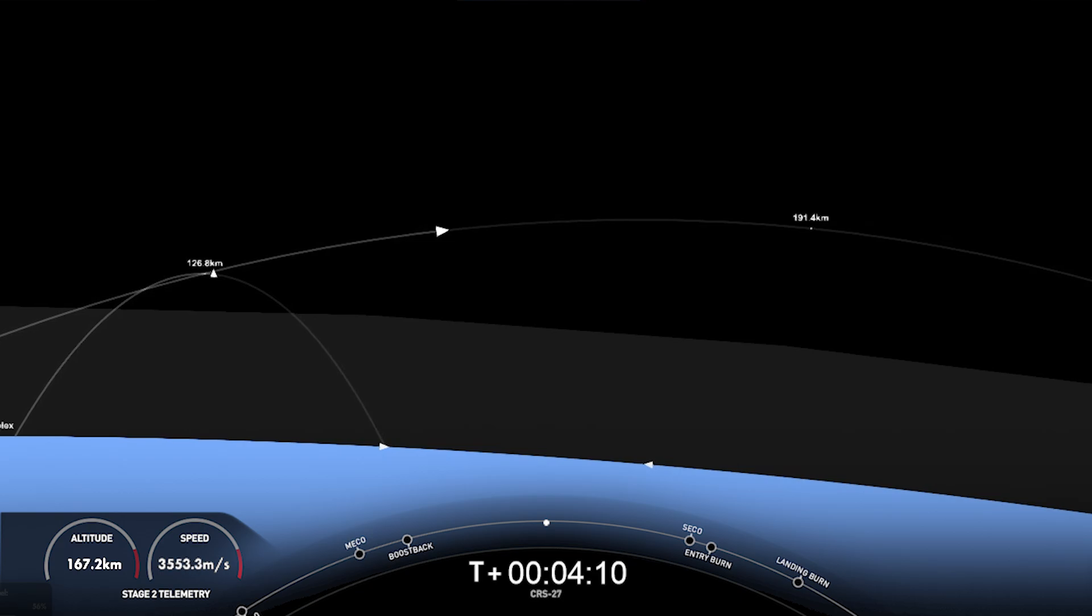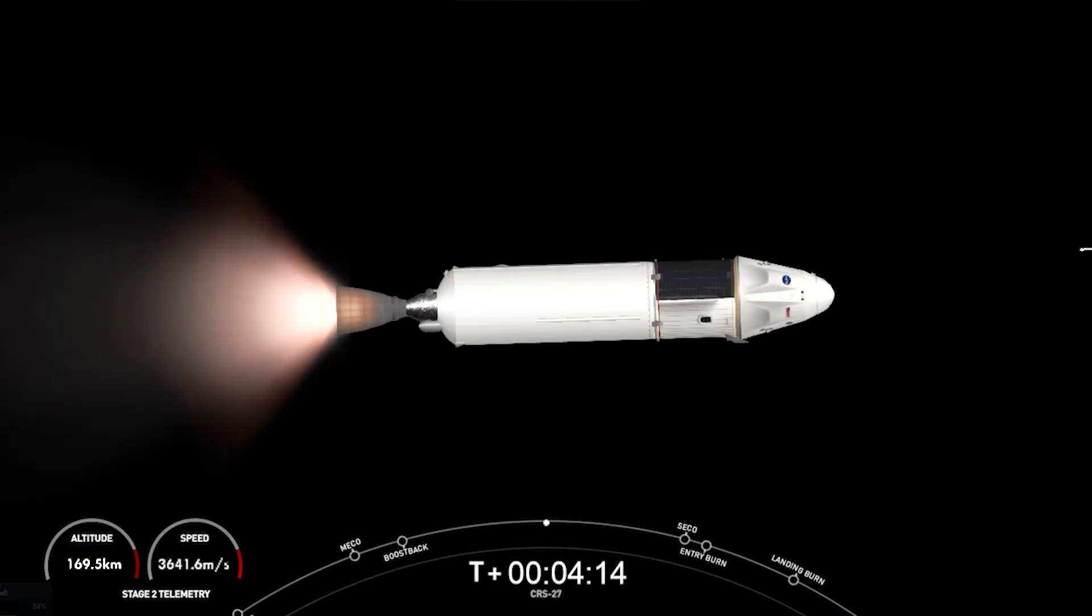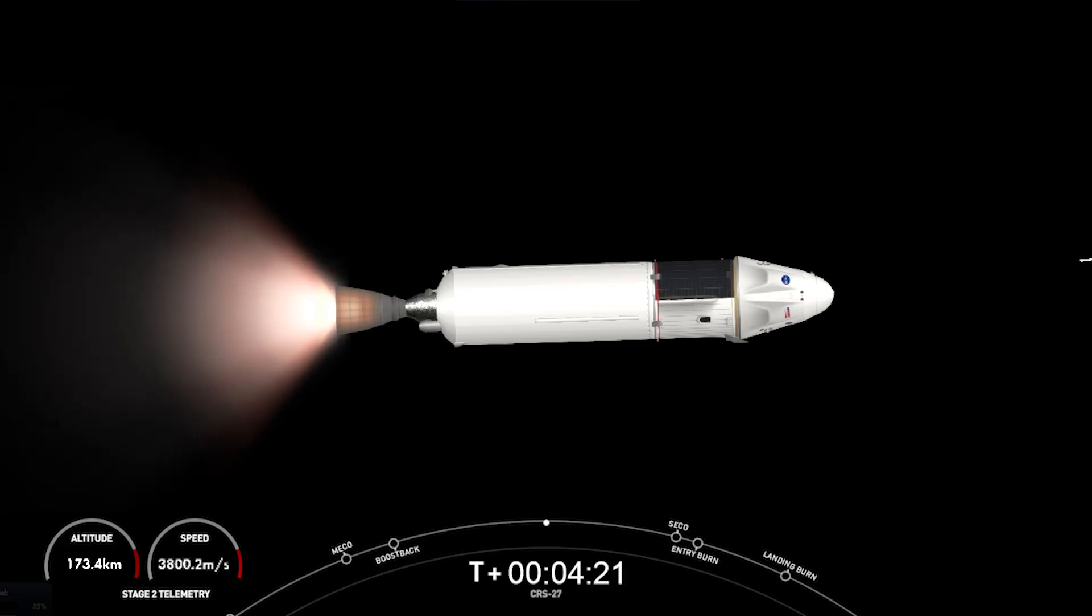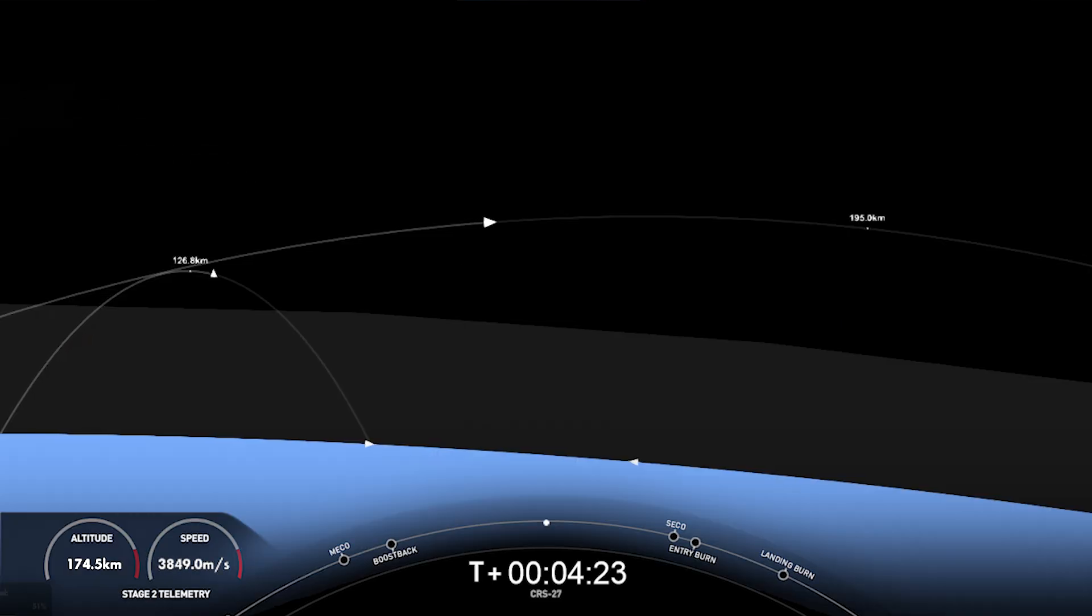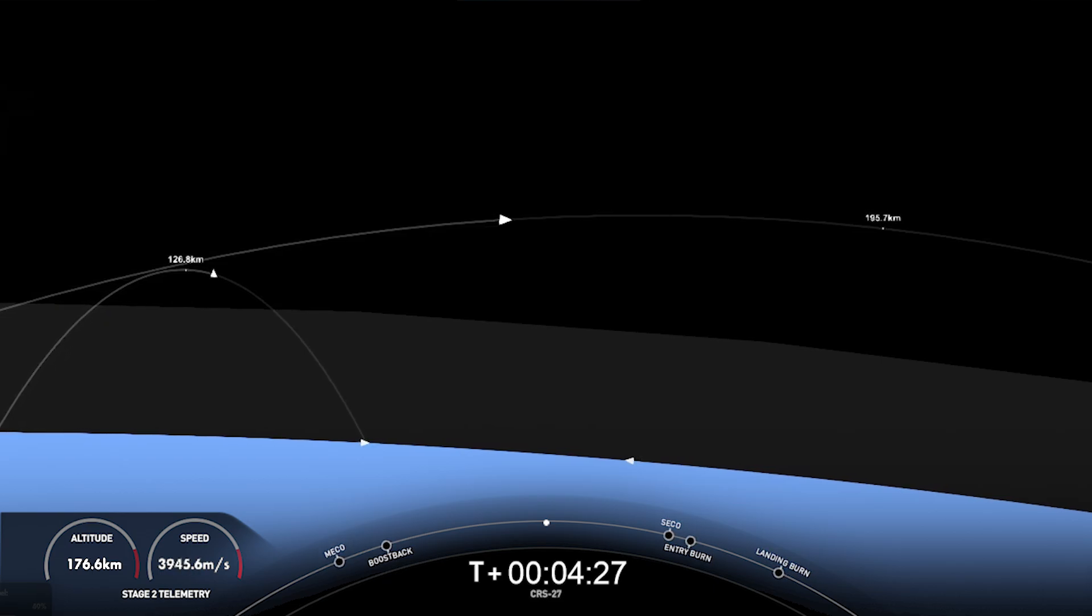The second burn is the landing burn. And this is a single engine burn, Engine 9, that brings the vehicle's speed down rapidly in order to land on the drone ship. Now occasionally on your screen, when the booster is visible, you may see some nitrogen gas bursts, and these are used for attitude control as the booster makes its way back to the drone ship.